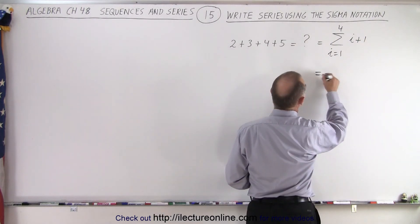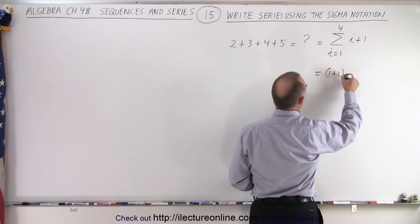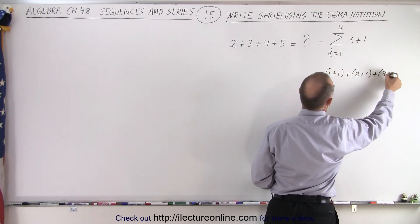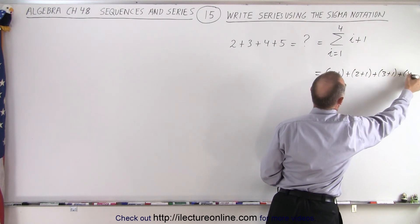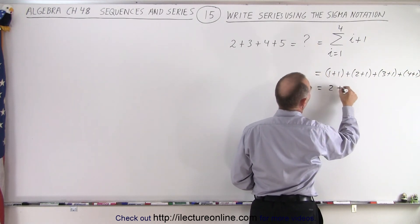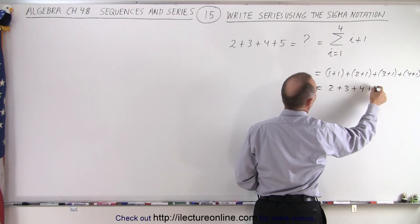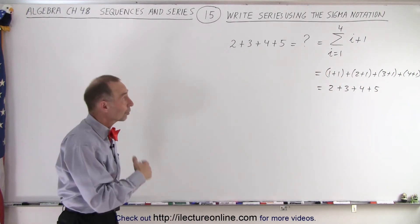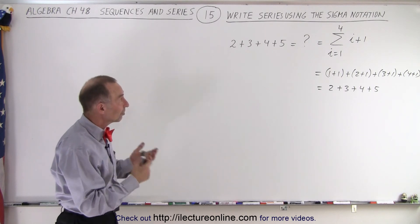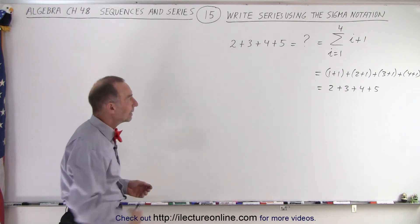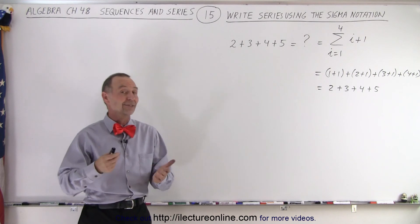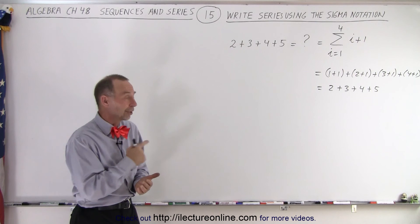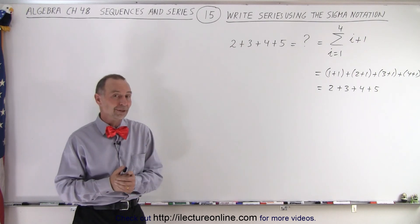Notice that this would equal one plus one plus two plus one plus three plus one plus four plus one, and of course that becomes equal to two plus three plus four plus five, which is the series that we started with. So we found the correct expression using the sigma notation by making that conversion, and that is how it's done with an easy example. They get more difficult, so stay tuned and we'll show you how to do that when things become a little bit more difficult.